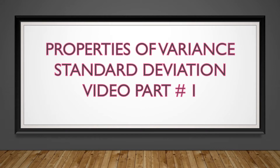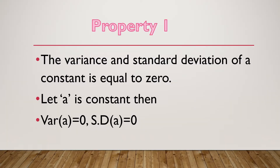The first property of variance and standard deviation: the variance and standard deviation of a constant is equal to zero. So if we consider any number — generally we represent it as 'a' — if there is no variability among all observations, the variance and standard deviation for that data set will be zero.